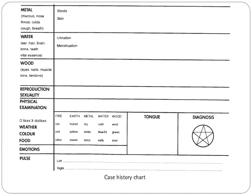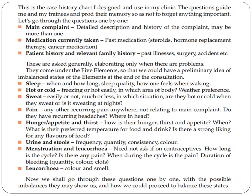This is the case history chart designed and used in the clinic, as the author notes. The questions guide practitioners and trainees and prompt their memory so as not to forget anything important. We have the main complaint, detailed description, and history — the patient may have more than one. For medication, we note currently taken, past medication, steroids, hormone replacement therapy, and cancer medication. For patient history, we note relevant family history, past illness, surgery, accident, etc. These are asked generally, elaborating only when there are problems, and they come under the five elements for a preliminary idea of the balanced states.